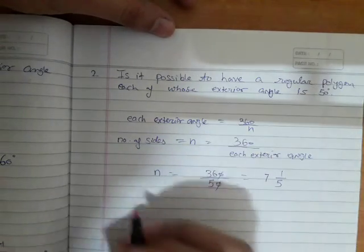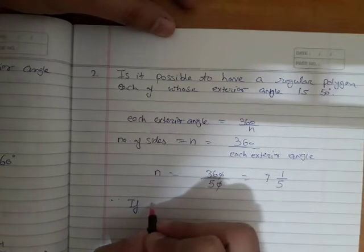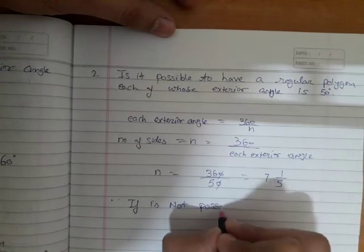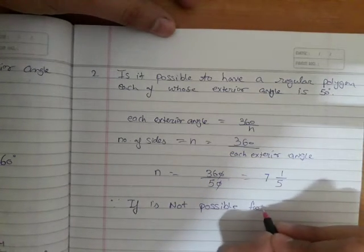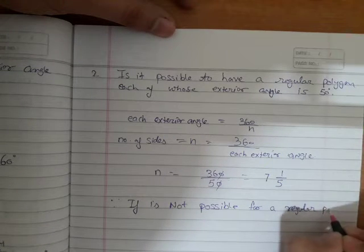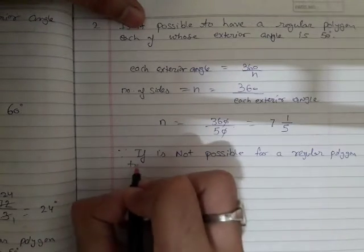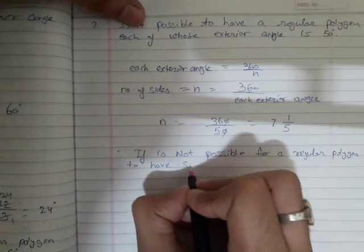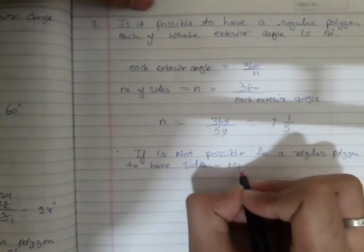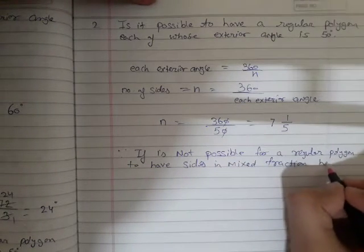Hence, it is not possible for a regular polygon to have the number of sides as a mixed fraction.